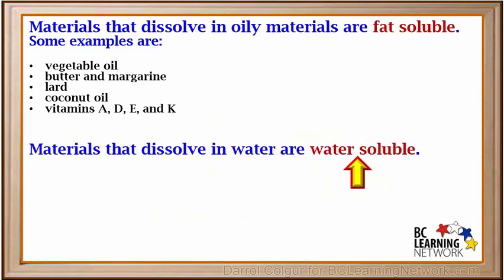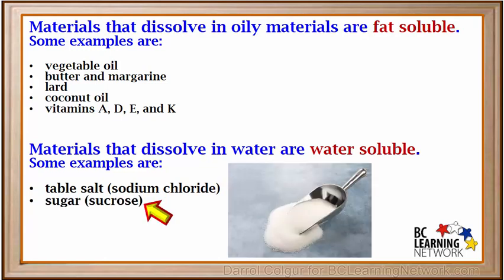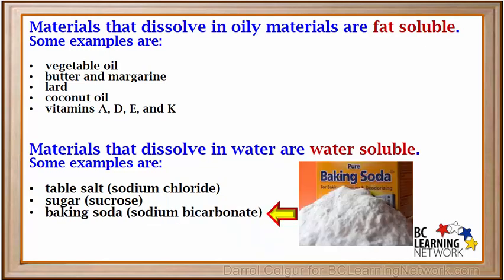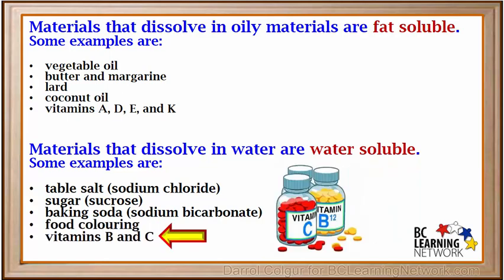Materials that dissolve in water are said to be water-soluble. Some examples of water-soluble materials are table salt, or sodium chloride; table sugar, which is also called sucrose or white sugar; baking soda, which is also called sodium bicarbonate; food coloring; and vitamins B and C.